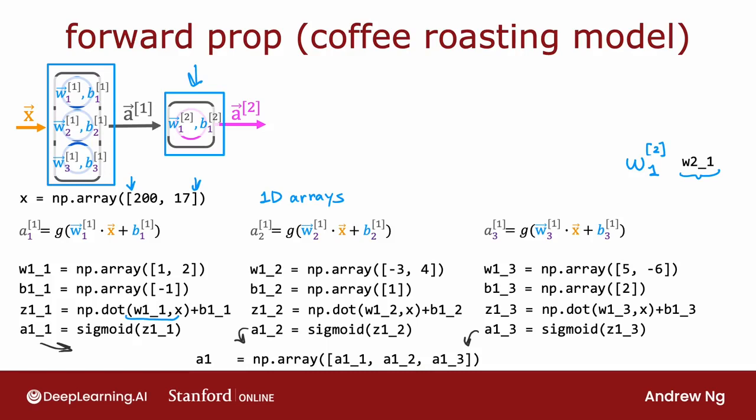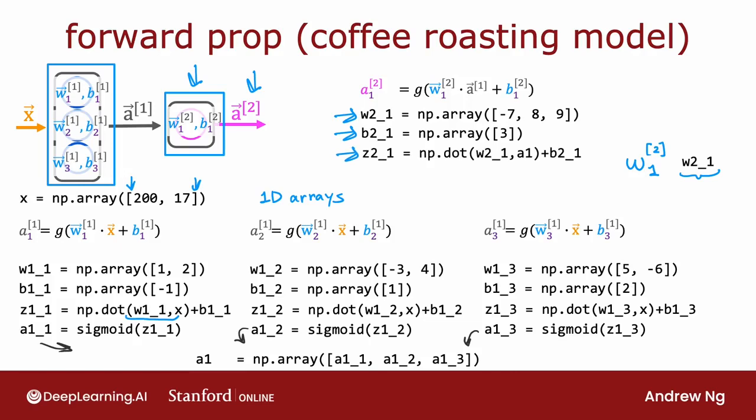Let's implement the second layer as well to compute the output a2. So a2 is computed using this expression, and so we would have parameters w2_1 and b2_1 corresponding to these parameters, and then you would compute z as the dot product between w2_1 and a1, and add b2_1, and then apply the sigmoid function to get a2_1, and that's it. That's how you implement forward prop using just Python and numpy.